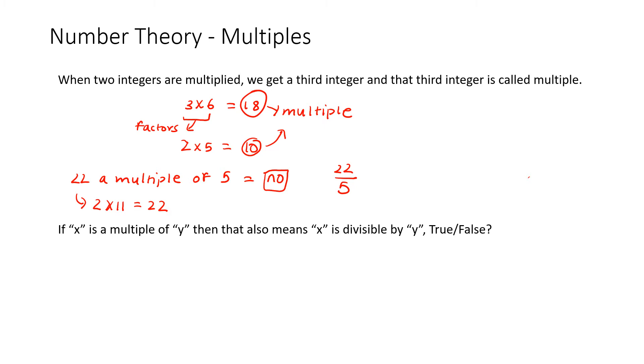If x is a multiple of y, then that also means x is divisible by y. Is that true or false? Now let's try to write this out. Let's take two integers z times y, and this equals x, where x is our multiple. And if I divide both sides by y, then we get z is equal to x over y.